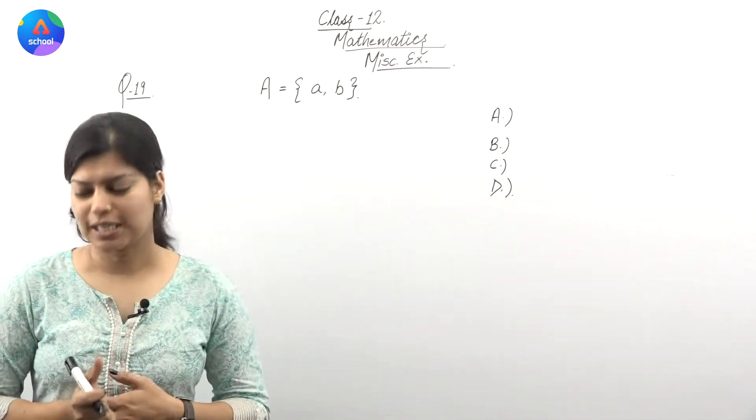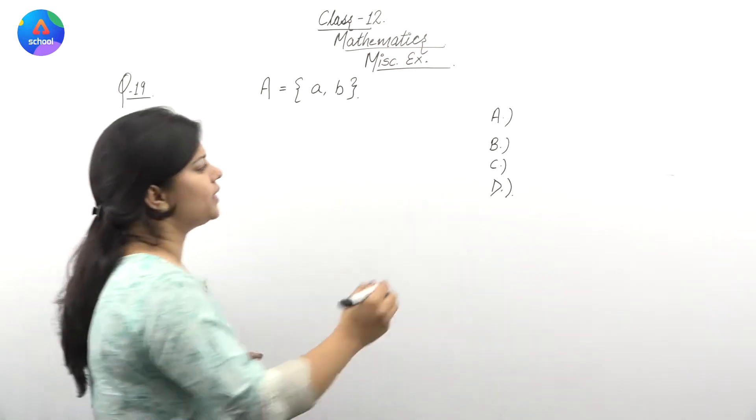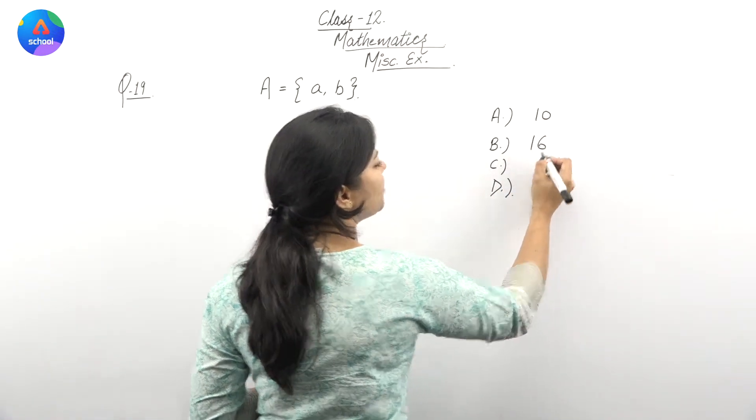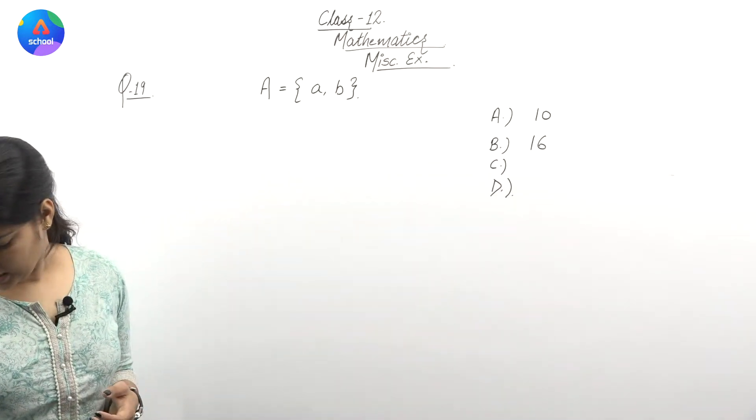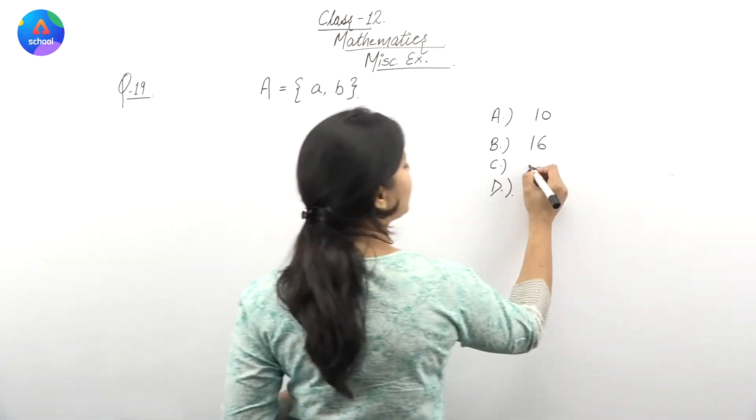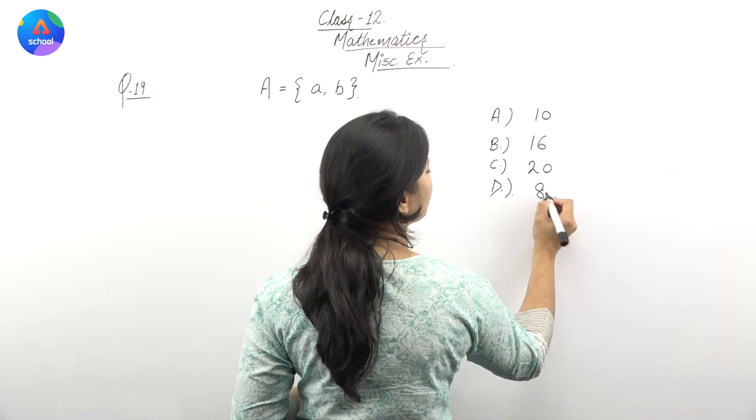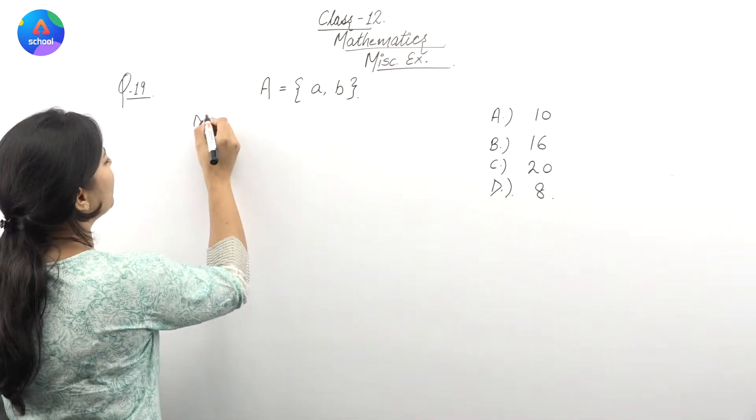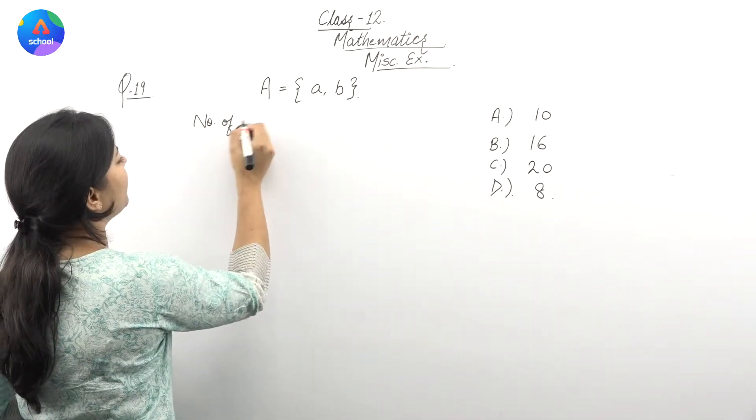There are four options given. Let's see what the options are: 10, 16, 20, and 8.